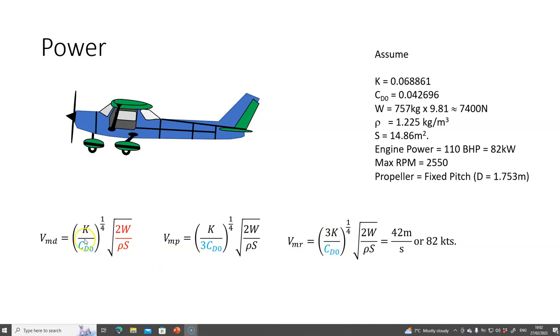That is 3K over CD0 to the power of a quarter. You can see here is K over CD0, K over 3 CD0, and this is now 3K over CD0. When I put the figures in for that, I get 82 knots.